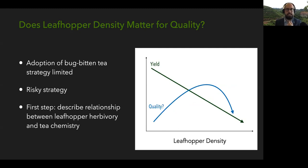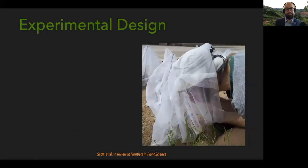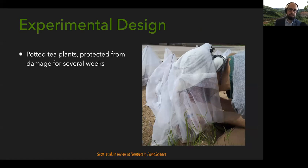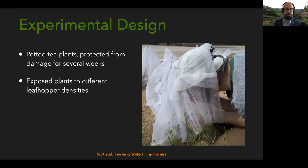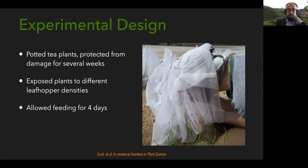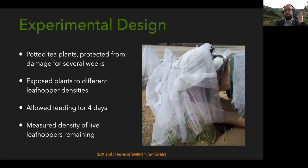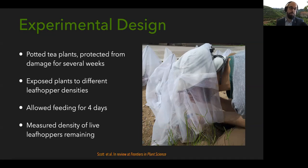As a first step, it's really important to characterize the relationship between leafhopper density and tea chemistry. I did this with a manipulative experiment using potted tea plants at Shanfu Tea Company. We grew those plants in mesh bags to keep them protected from insects for several weeks so they had new growth, then I transferred leafhoppers onto the plants in different densities. We allowed them to feed for four days, then at the end I measured leafhopper density again as I took them off the plants, since transferring them can kill them and they may escape. The density at the end of the experiment is a better indicator of what the plants were experiencing.